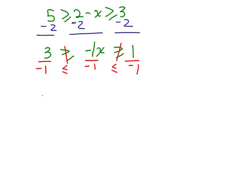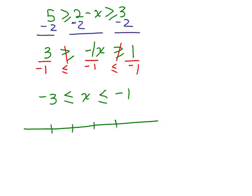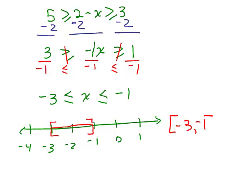Dividing by negative 1 flips both inequalities to less than or equal. So 3 divided by negative 1 is negative 3, and 1 divided by negative 1 is negative 1. My solutions are between negative 3 and negative 1. Graphing it: here's 0, negative 1, negative 2, negative 3 — both endpoints are included since it's less than or equal. Our solution in interval notation is [-3, -1].